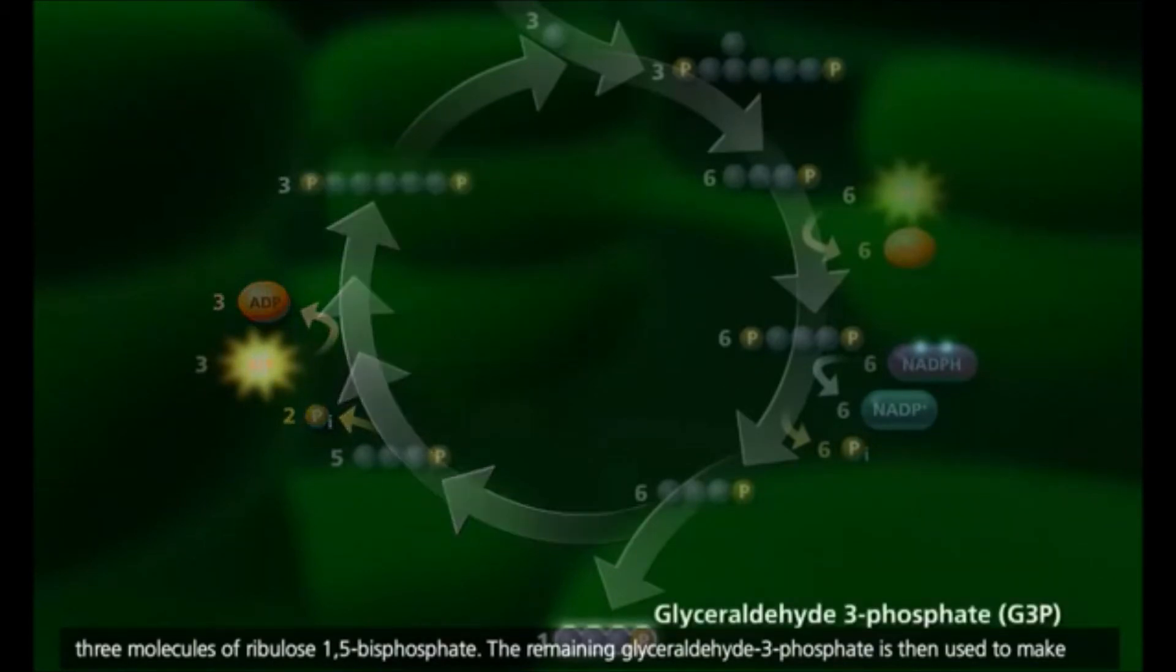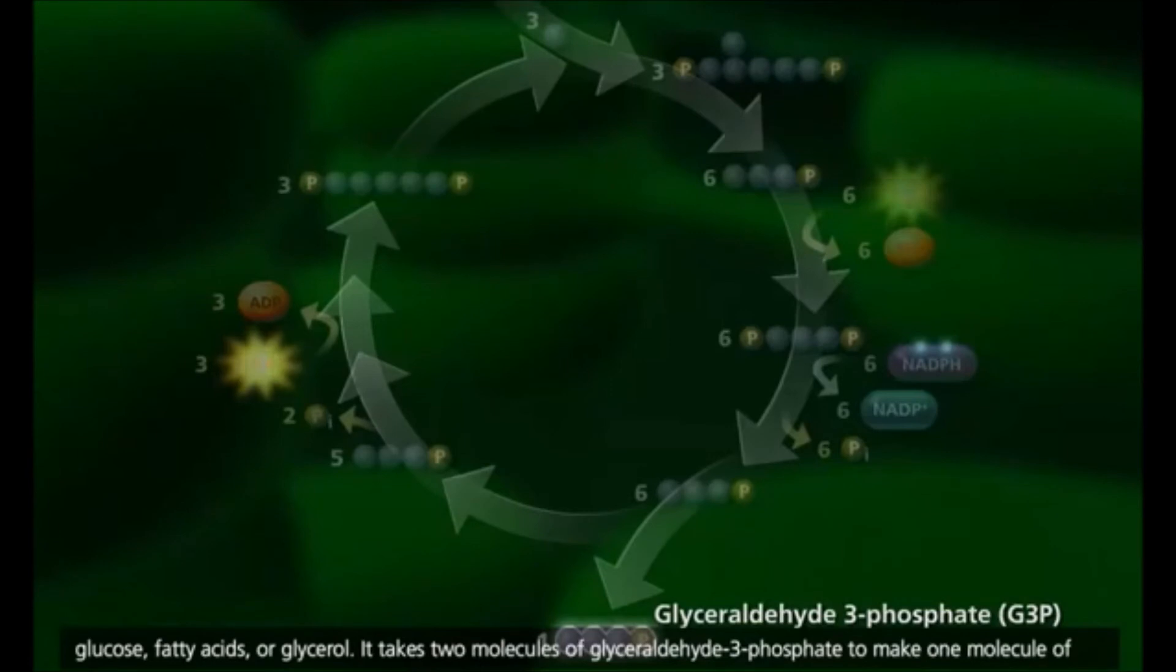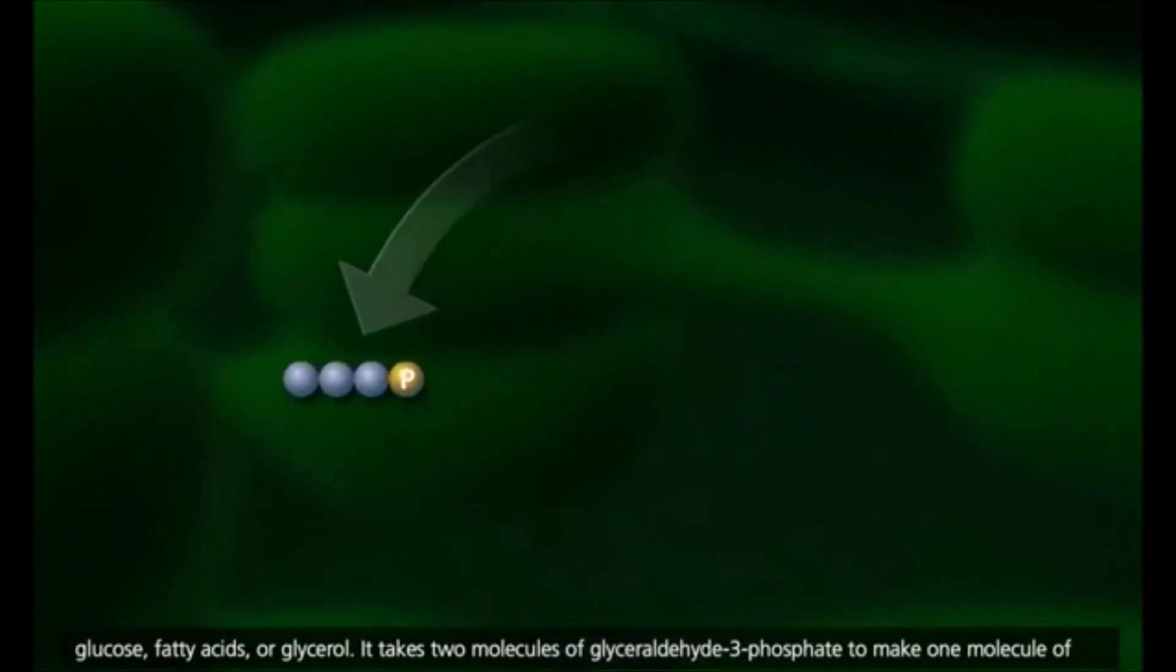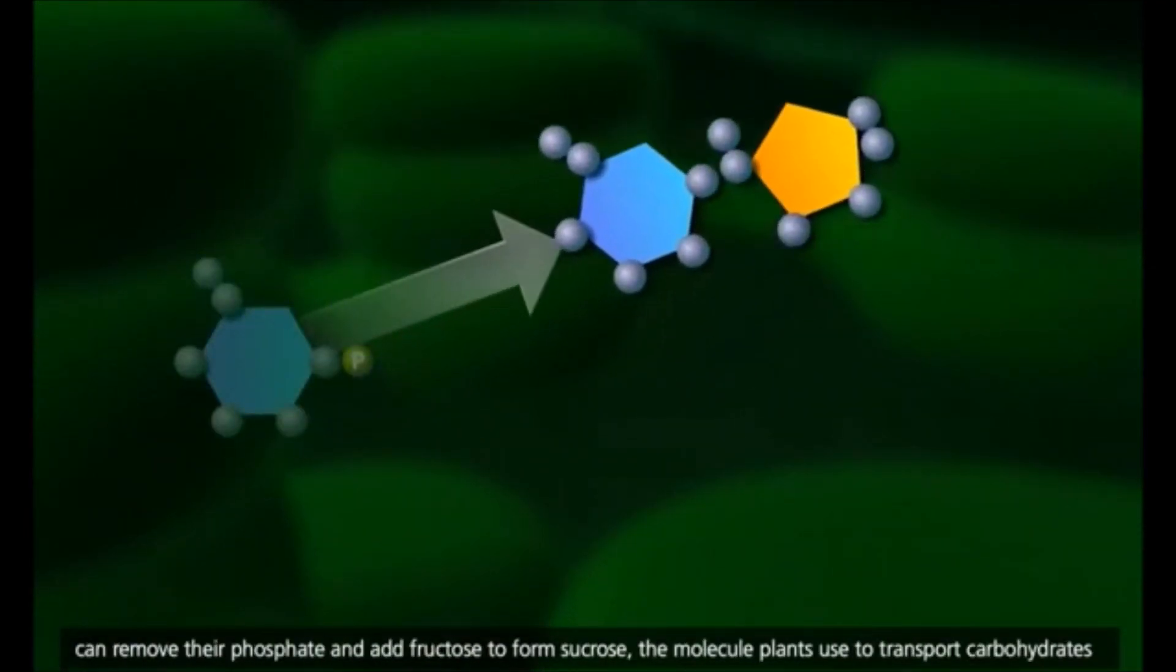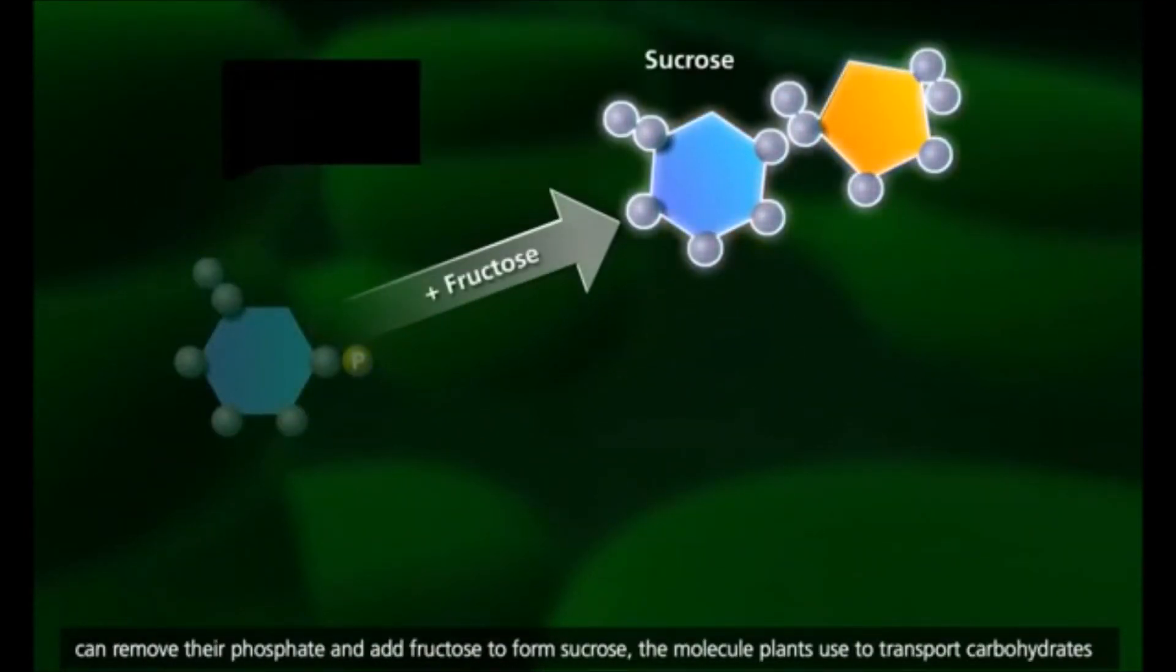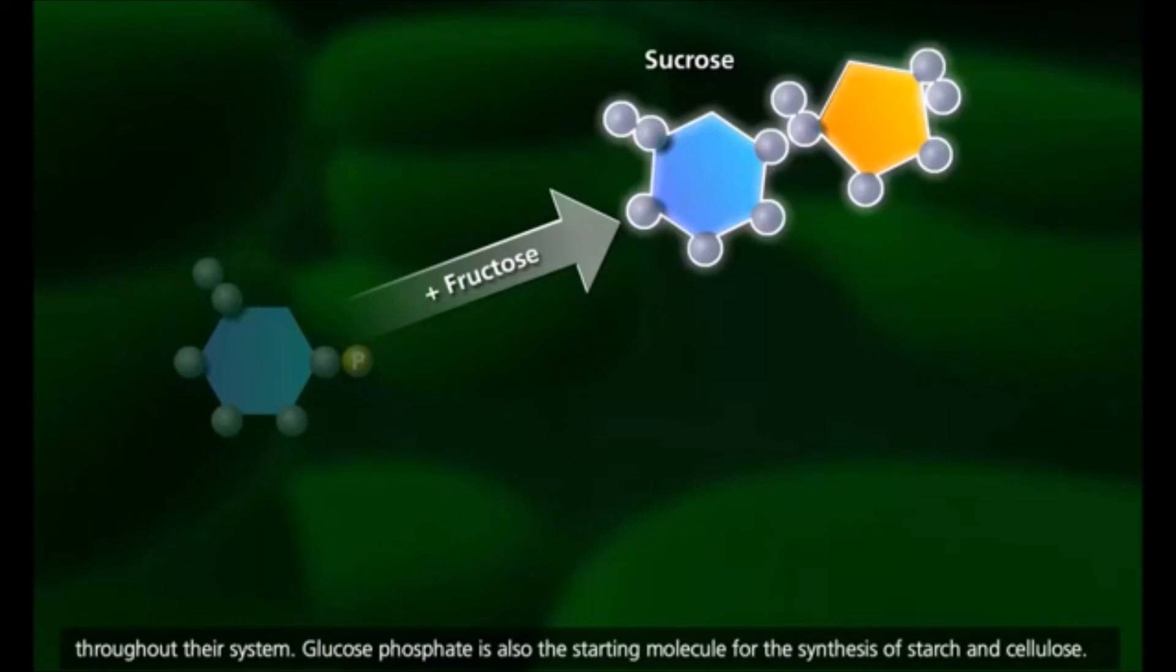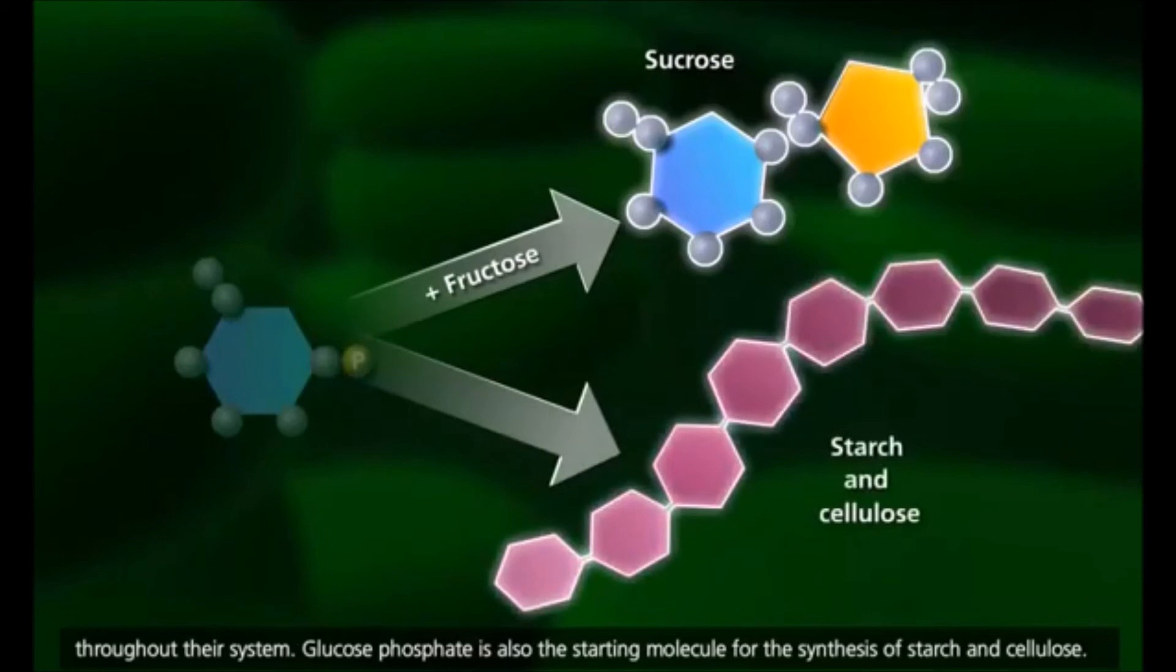The remaining glyceraldehyde-3-phosphate is then used to make glucose, fatty acids, or glycerol. It takes two molecules of glyceraldehyde-3-phosphate to make one molecule of glucose phosphate. Thus, the Calvin cycle has to run six times to produce one molecule of glucose. These molecules can remove their phosphate and add fructose to form sucrose, the molecule plants use to transport carbohydrates throughout their system. Glucose phosphate is also the starting molecule for the synthesis of starch and cellulose.